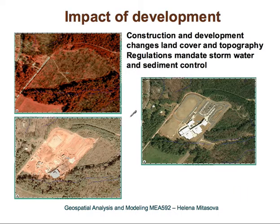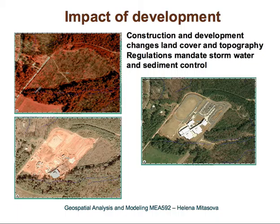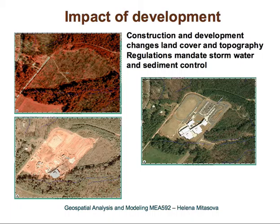Here is an example of modeling the spatial and temporal patterns of surface water due to the impact of development. This is an area on Centennial Campus — essentially abandoned agricultural fields that started to be covered by secondary forest — where a middle school was built. This is the situation in 1993, during construction in year 2000, and a post-construction image from about 2001.